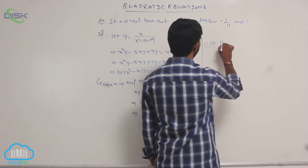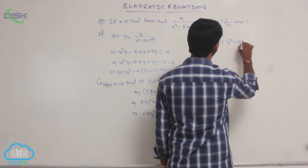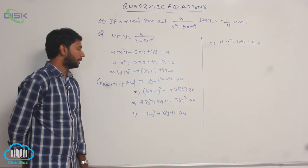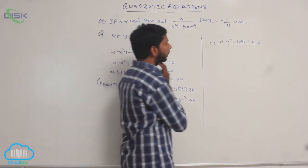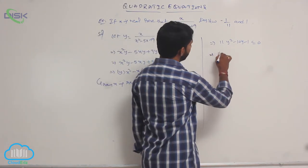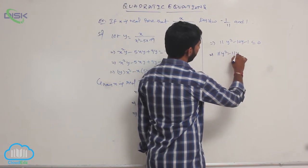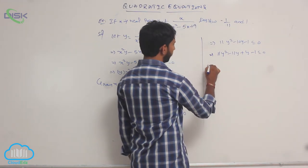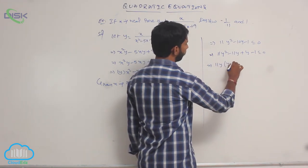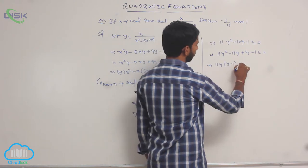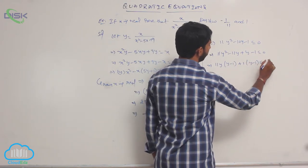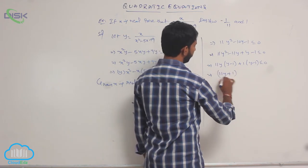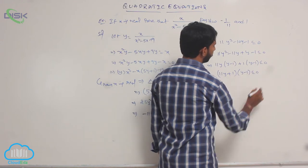That implies 11y² - 10y - 1 ≤ 0. Splitting into factors: 11y² - 11y + y - 1 ≤ 0. Taking 11y common from the first two terms: 11y(y - 1) + 1(y - 1) ≤ 0. The factors are (11y + 1)(y - 1) ≤ 0.